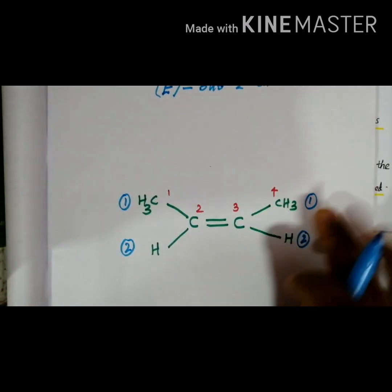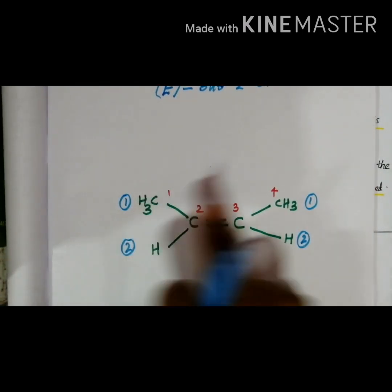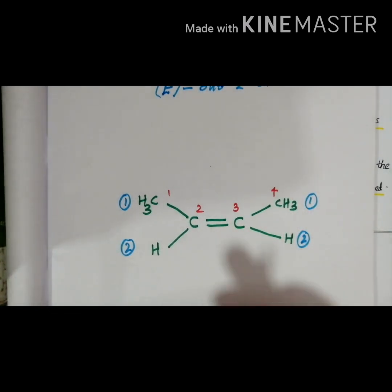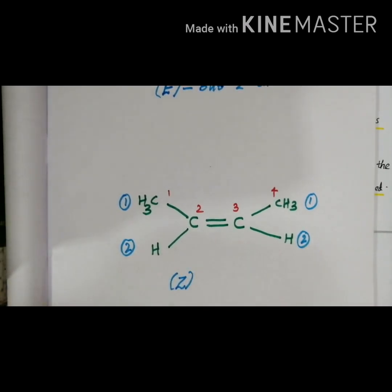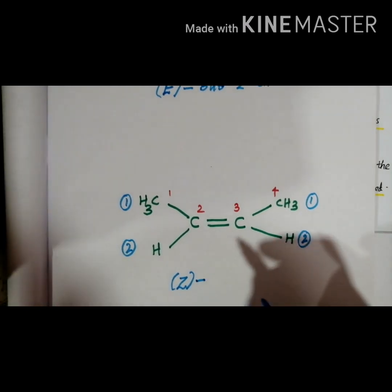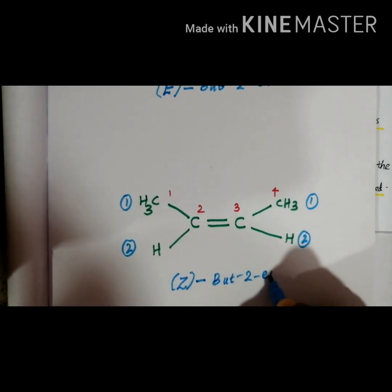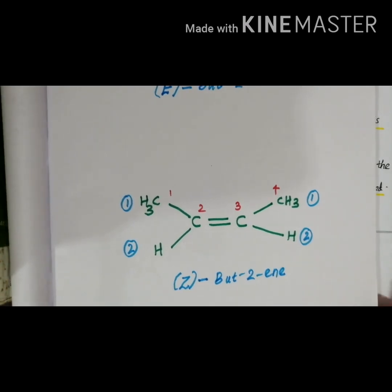Compare this 1, 1, 2, 2. That means priority groups are on the same side. That means same means Zusammen, Z represented in a bracket and it is separated by using hyphen. Then this is also a But-2-ene. This is a simple example for describing the idea of E and Z notation.